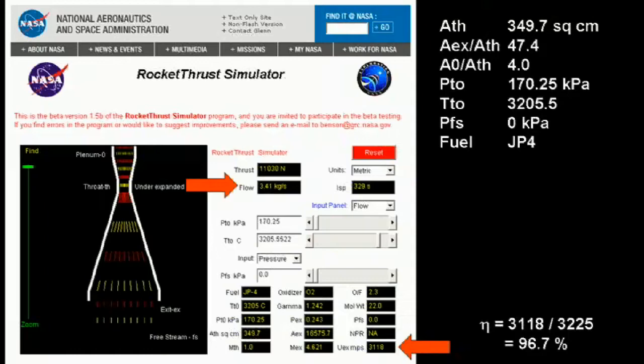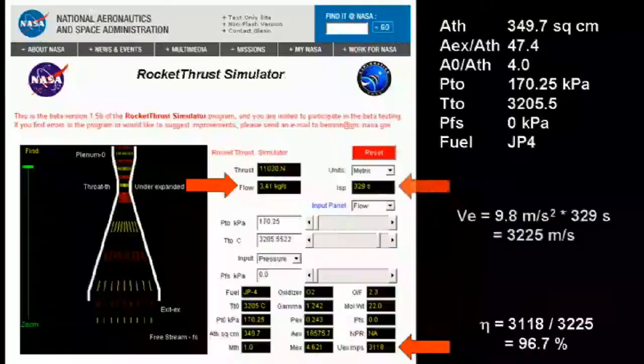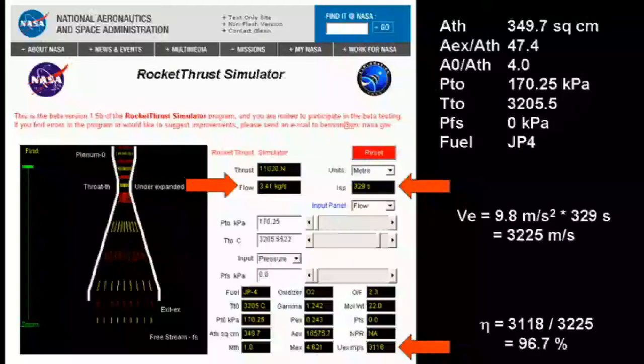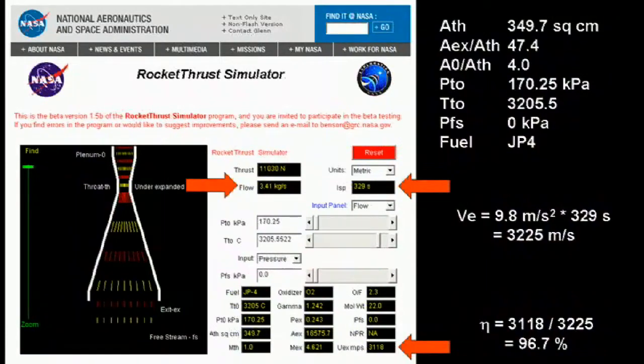And just where did I find the effective velocity on this page? You have to calculate it. No problem. We just learned how to do that. You multiply the specific impulse, in this case 329 seconds, by the gravitational constant of 9.8 m per second squared, and you get 3,225 m per second.